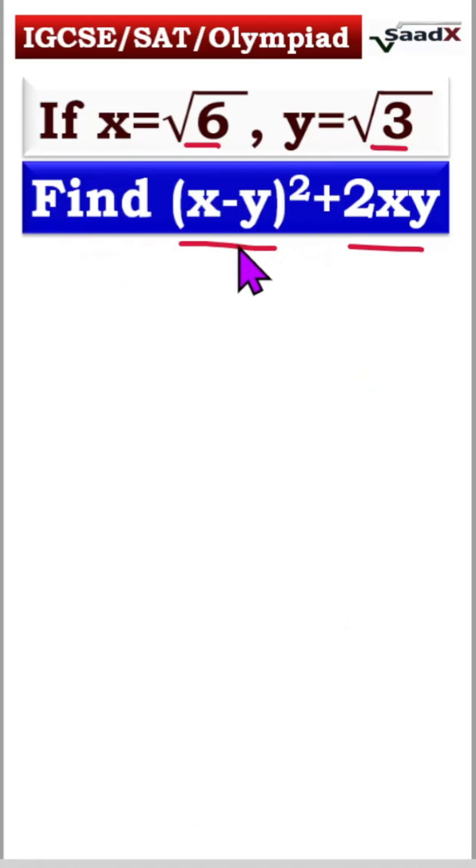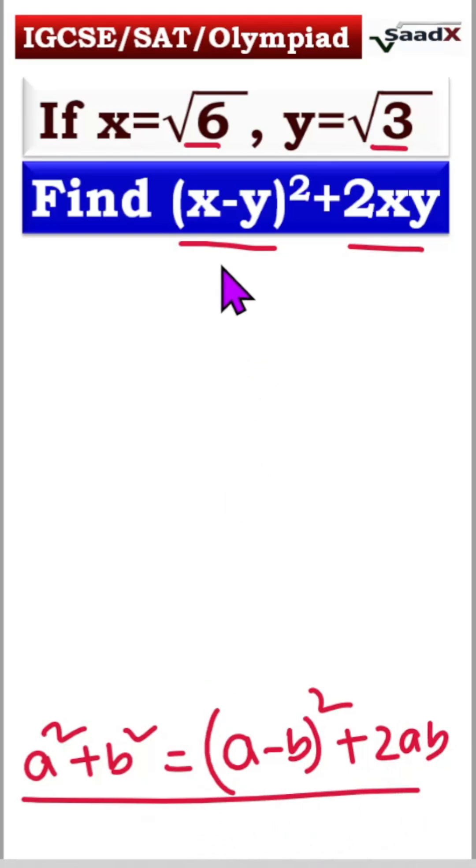If you want a smooth solution, you have to know this identity: a square plus b square equals a minus b whole square plus 2ab. If you know this rule, it's very simple.